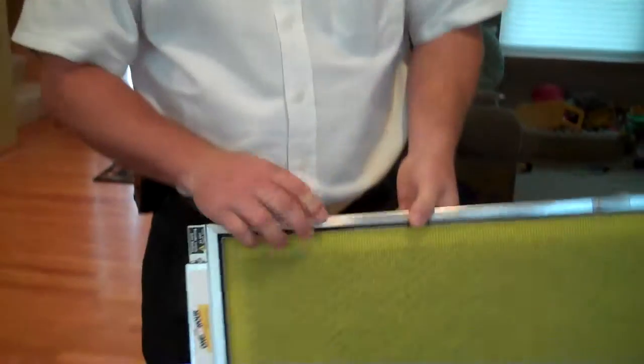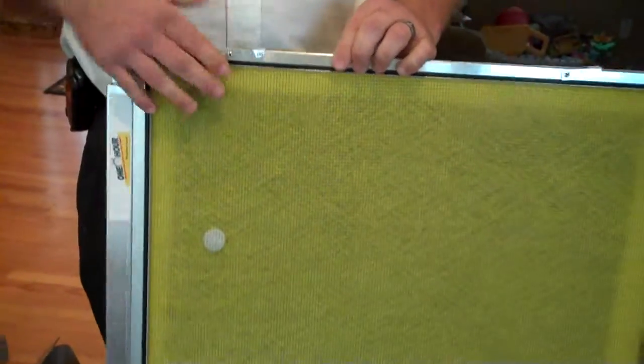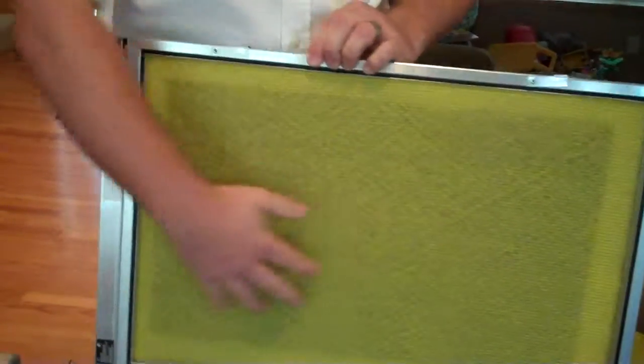Sometimes this black mesh will get dirty. What you can do is just take your vacuum and vacuum this off.